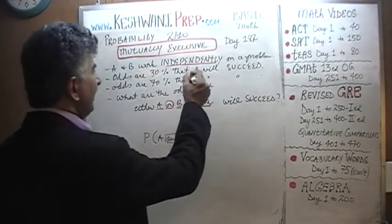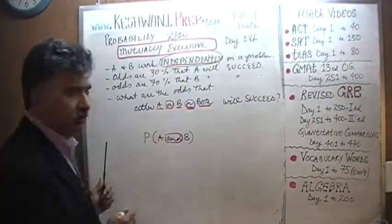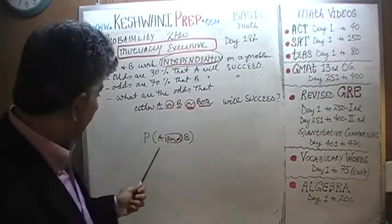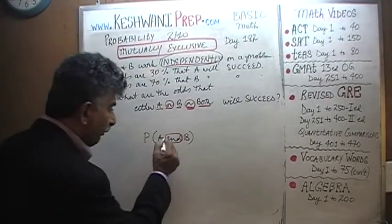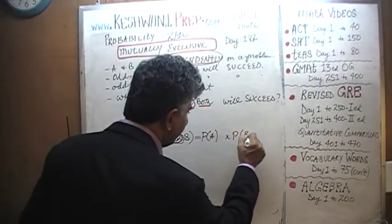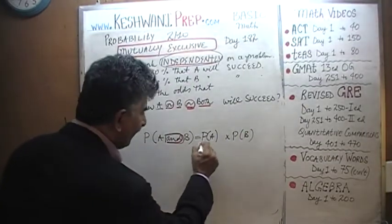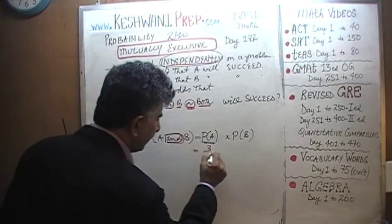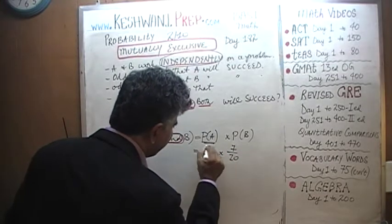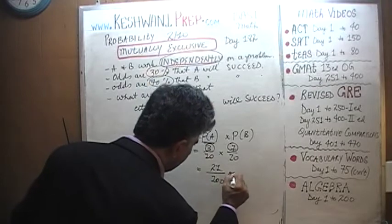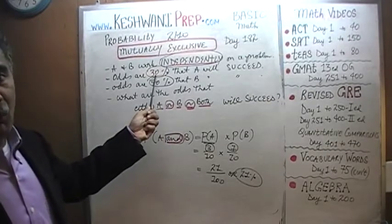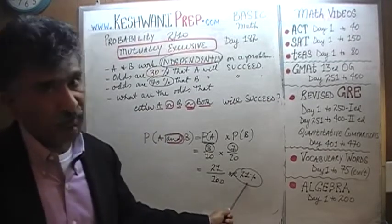Yesterday we found out that as long as they are independent — and we were told they are working independently in this case — the odds that both A and B succeed is simply the odds of A being successful times the odds of B being successful. The odds of A is 30% (3 out of 10), the odds of B is 70% (7 out of 10), and we saw that is 3 times 7 which is 21 over 100, or 21%.